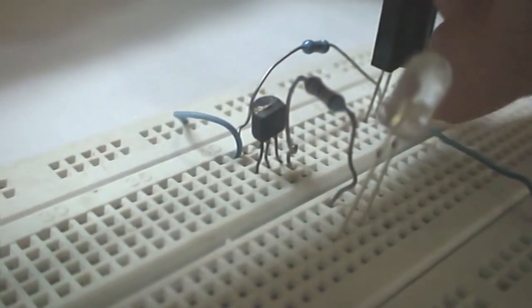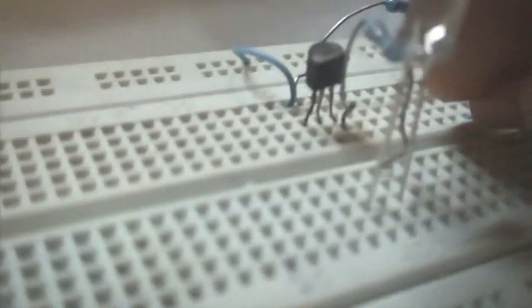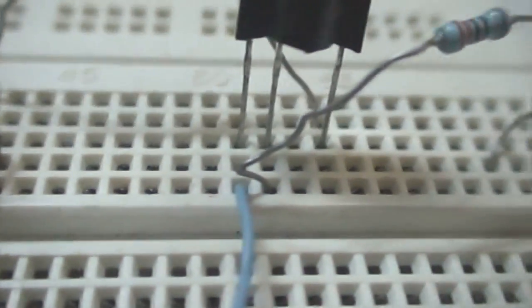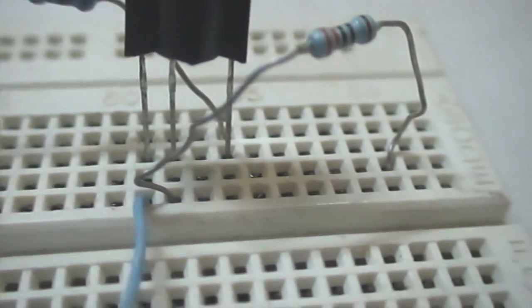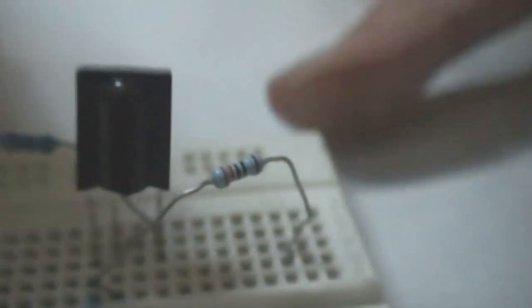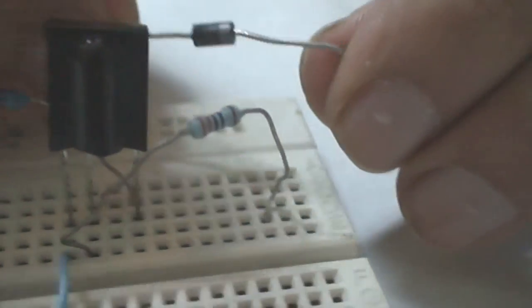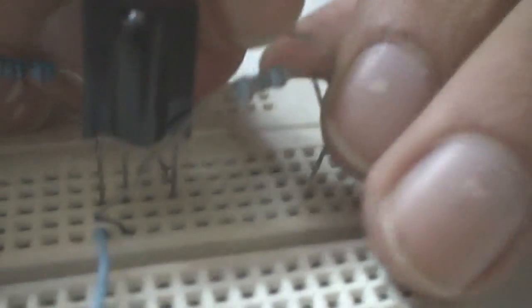We connect the 330K Ohm resistor from the VCC of TSOP1738. We connect the diode from the positive rail of the breadboard to the 330K Ohm resistor.